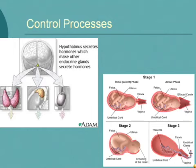Control processes — coordination and regulation are the fourth characteristic of life. Control processes are mechanisms that ensure organisms carry out metabolic activities in the proper sequence at the proper rate. All the chemical reactions of an organism are coordinated and linked together in specific biochemical pathways.